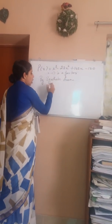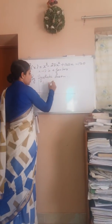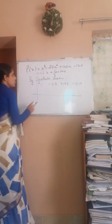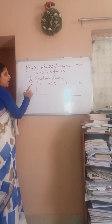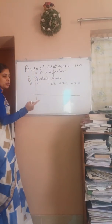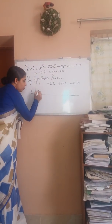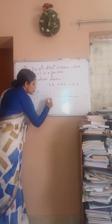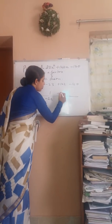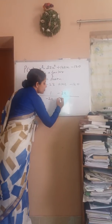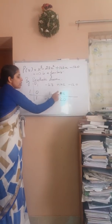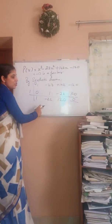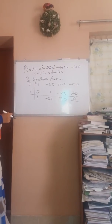We'll put all the coefficients: 1, -23, 142, and -120. Since (x - 1) is a factor, we put the value 1 here. Adding the numbers: 1, then -22, then -22 × 1 gives -22, which gives 120. Adding these two numbers gives 120, and 120 × 1 gives +120, so we get 0 at the last, confirming the synthetic division is correct.